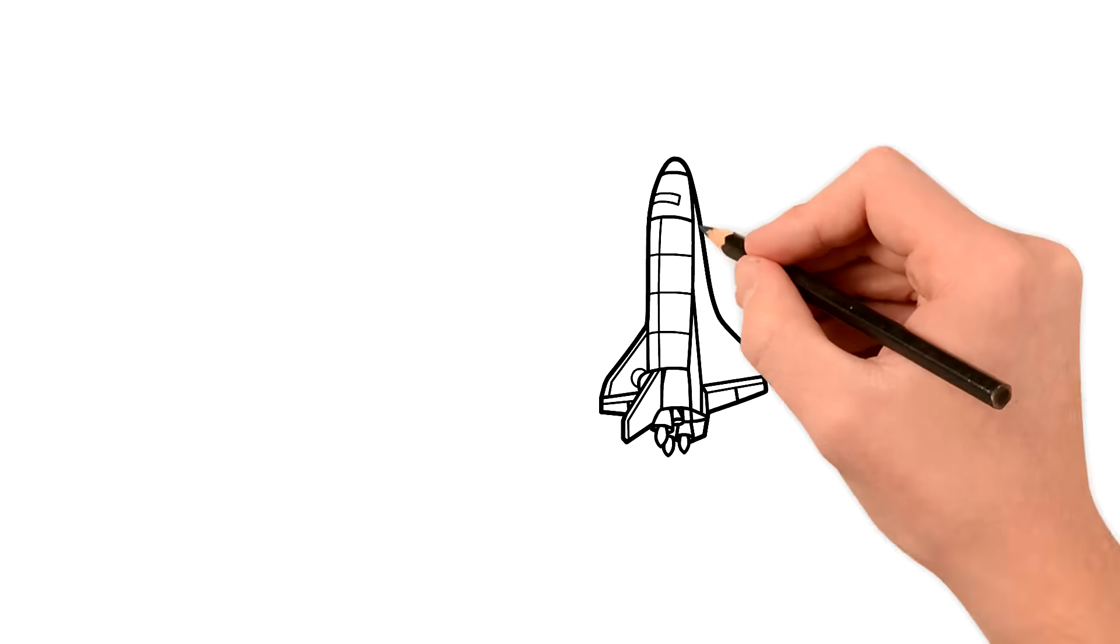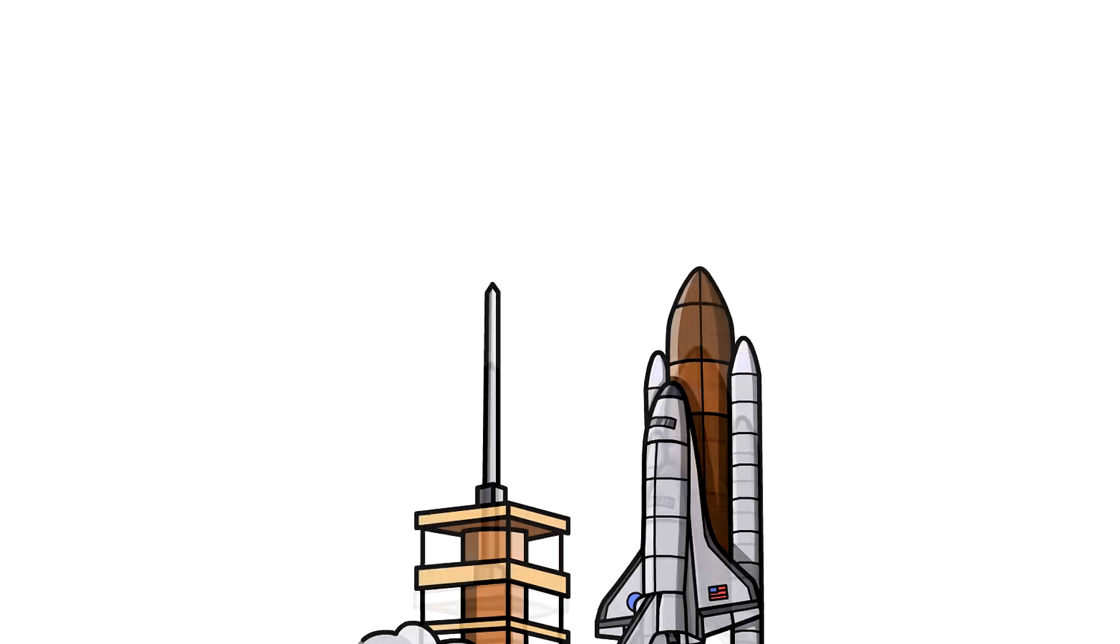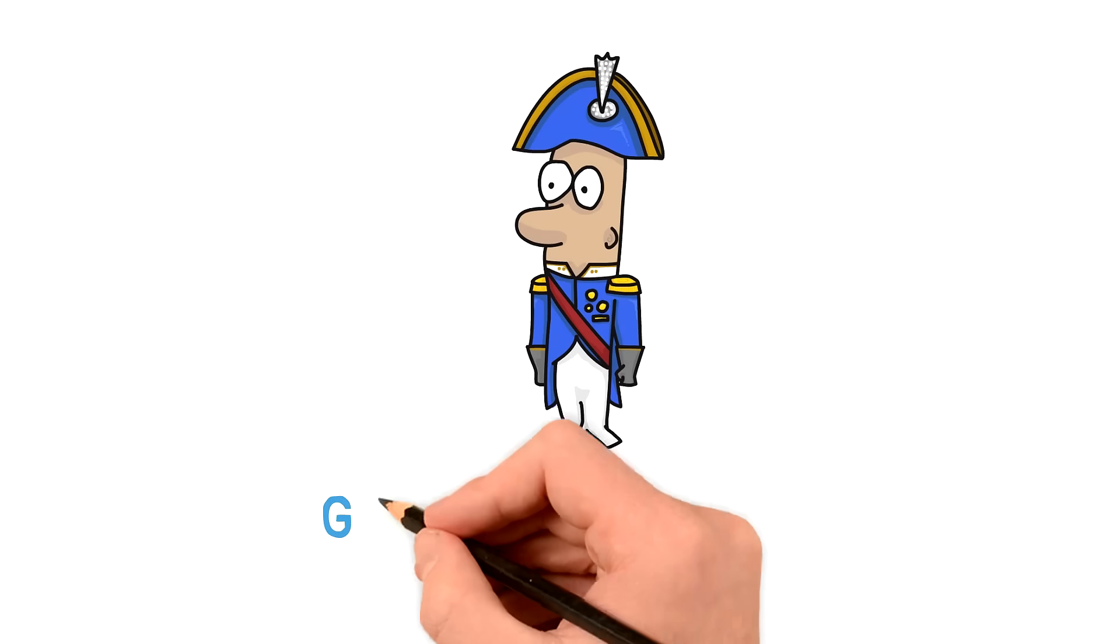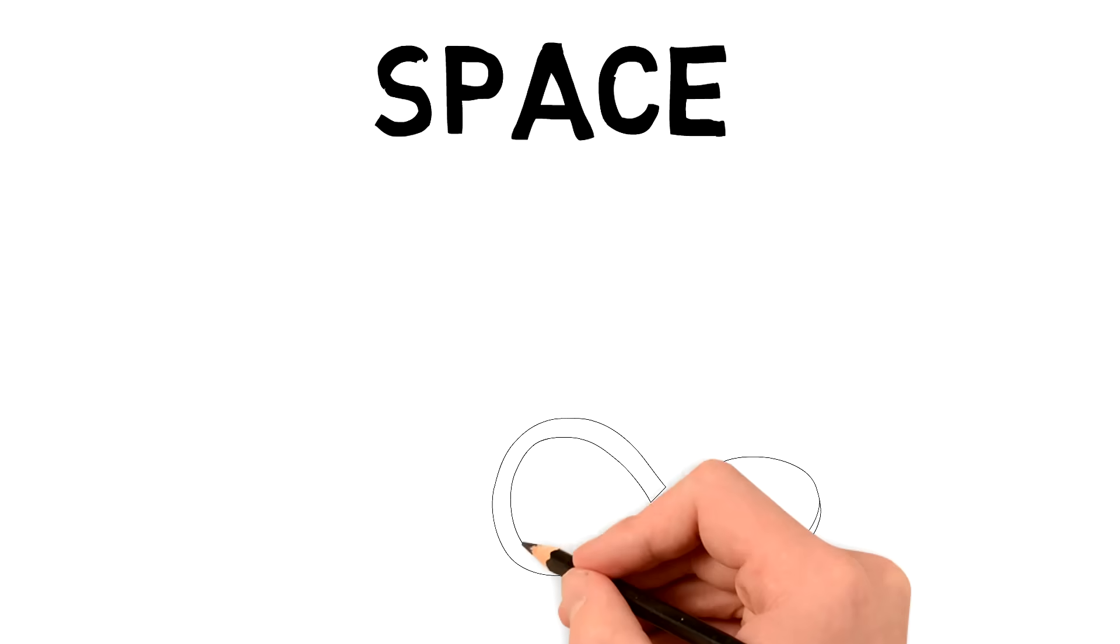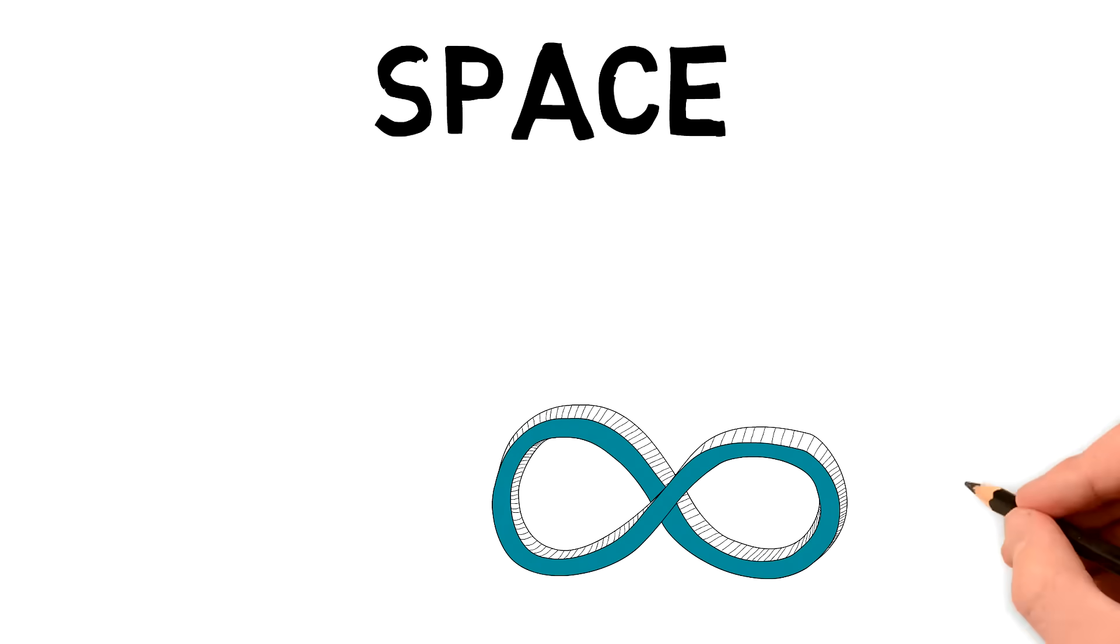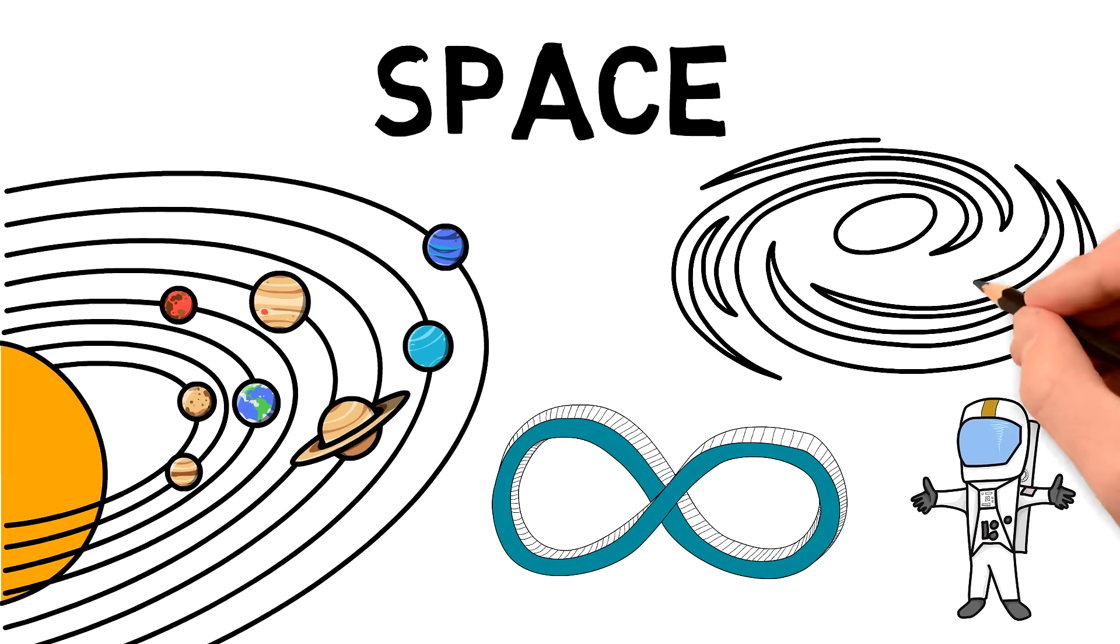5, 4, 3, 2, 1, 0. Space. The infinite expanse in which everything exists. Us, Earth, the solar system, galaxies, black holes, everything we know and probably a lot more that we don't.